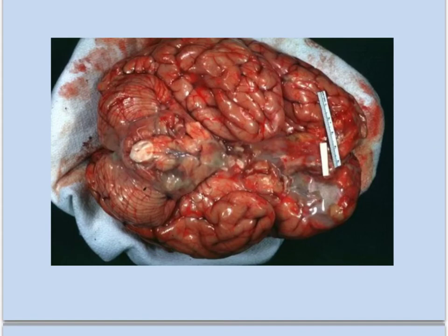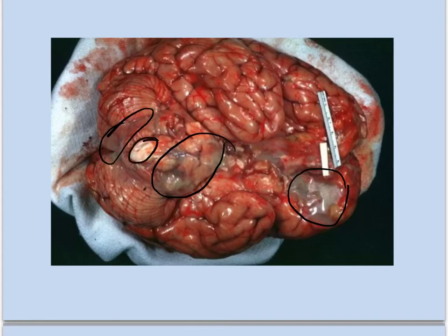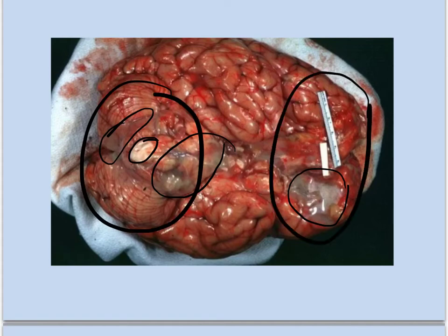This is a brain of a person who had bacterial meningitis — you can see the gray bacteria buildup here. This is the brain stem, the cerebellum, and then the frontal lobes. This brain is kind of upside down — this is the bottom of the brain.